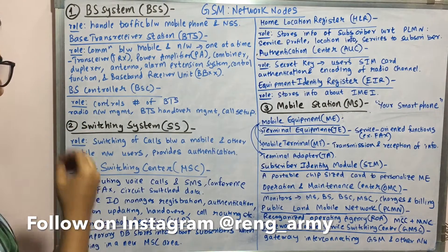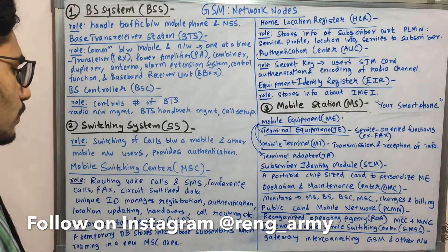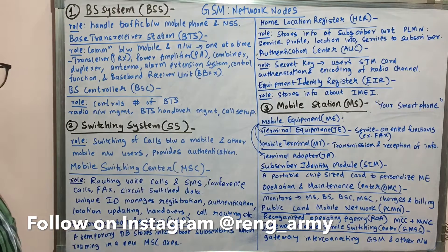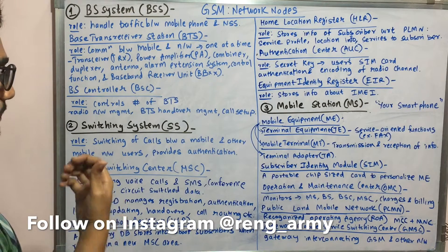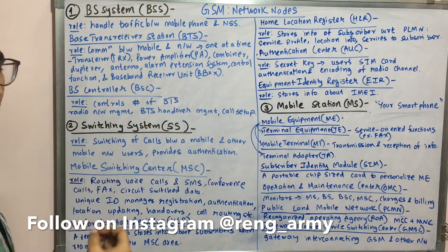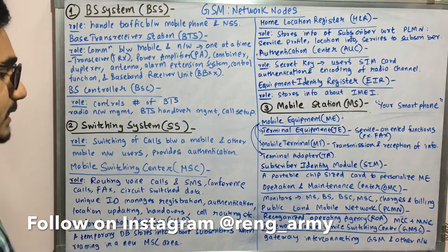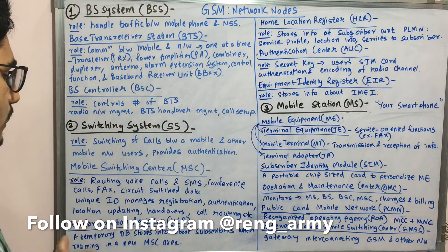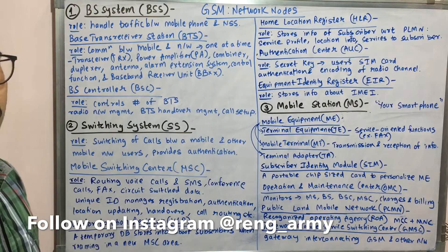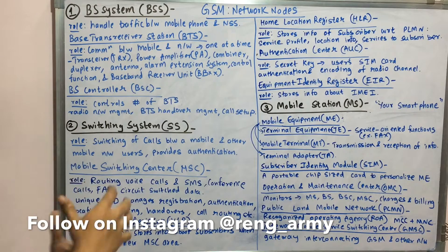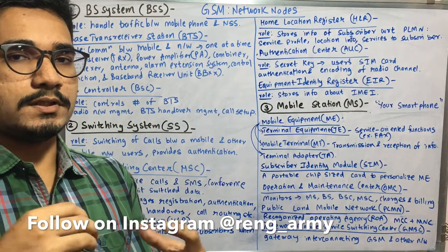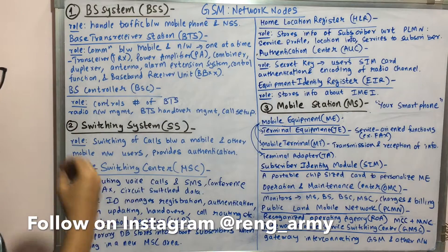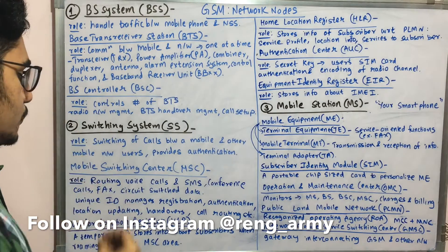The Switching System includes the Mobile Switching Center (MSC), whose role is routing of voice calls, SMS (Short Messaging Service), conference calls, facsimile, circuit-switched data. It has a unique ID which manages registration, authentication, location updating, GPS tracking, handovers, and call routing. Essentially, switching between mobile services — SMS, data services — everything is handled in the MSC.